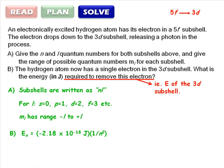Part A. Subshell 3D has a principal quantum number of 3, an L value of 2, and an ML range of negative 2 to positive 2. Subshell 5F has a principal quantum number of 5, an L value of 3, and an ML range of negative 3 to positive 3.